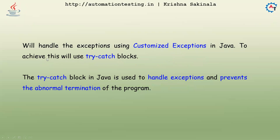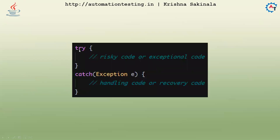To achieve customized exception handling, we use try and catch blocks. Both are predefined keywords in Java used to handle exceptions. The try-catch block prevents the abnormal termination of the program. The syntax looks similar to how you write curly braces for a method — we have a try block, and a catch block which accepts an exception class object.